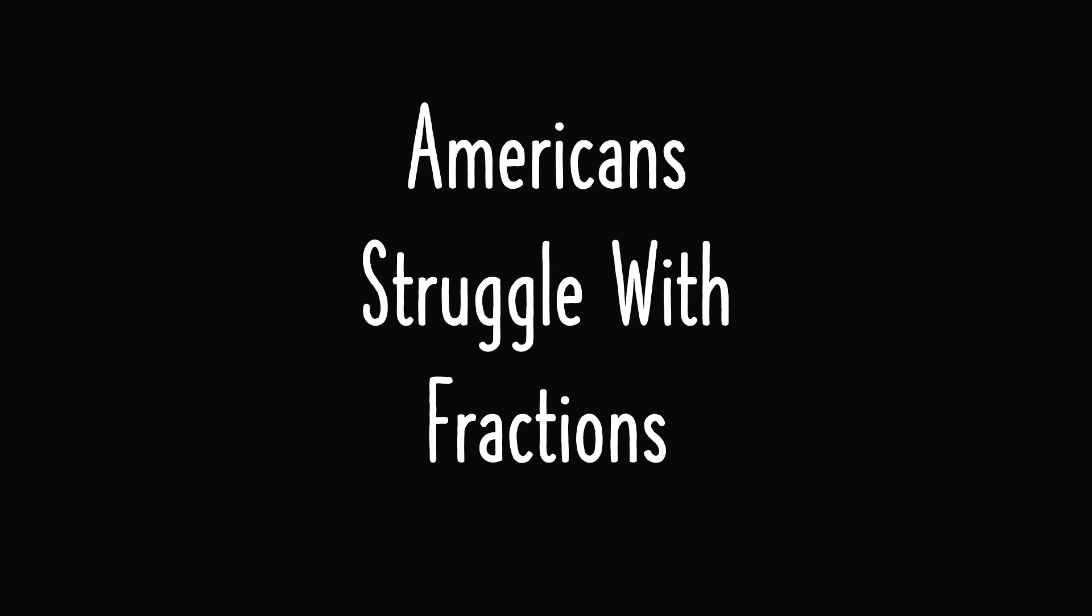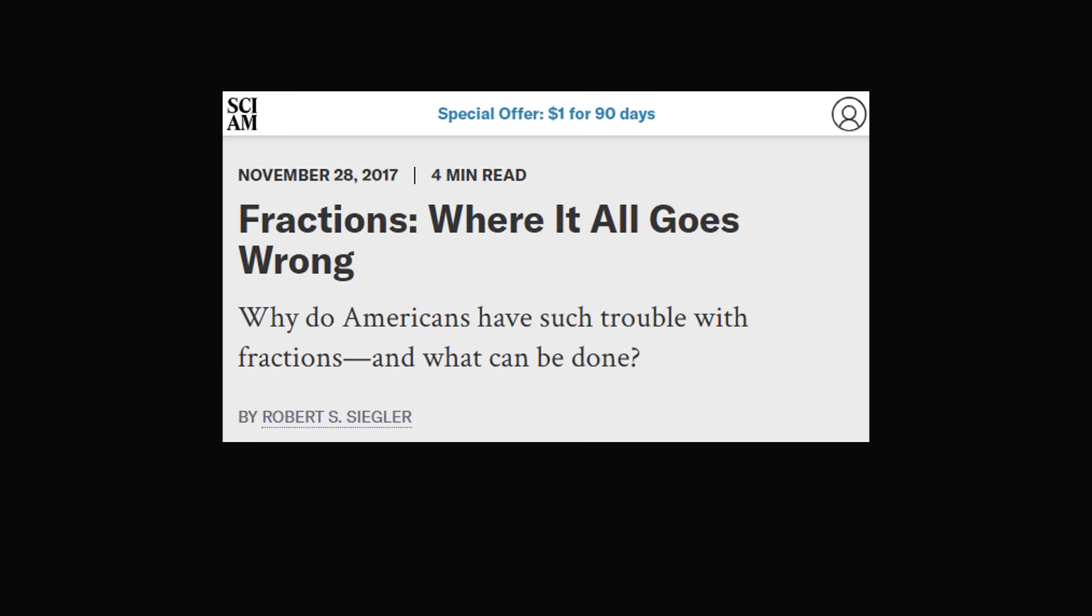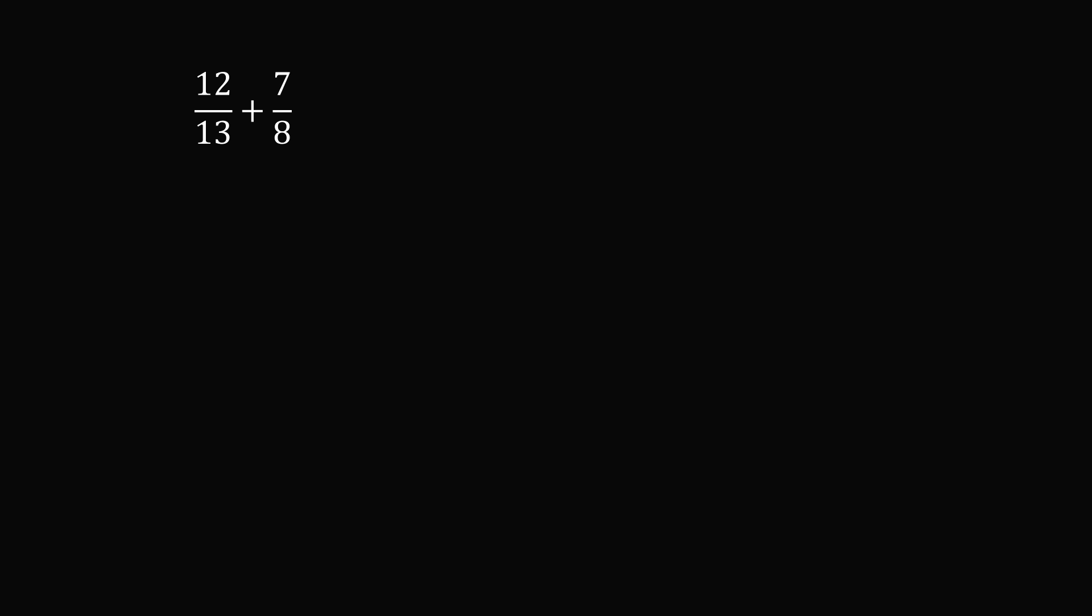This may be a good time to highlight how much Americans struggle with fractions. Here's a question that Scientific American covered a few years ago. 12 over 13 plus 7 over 8 is closest to which whole number? You don't need to calculate the answer, you just need to approximate. The answer choices are 1, 2, 19, and 21. Any student that understands fractions would know that this expression is closest to approximately 1 plus 1, and the correct answer is 2.